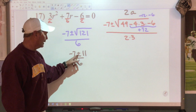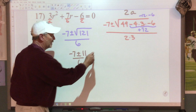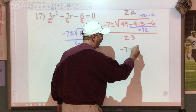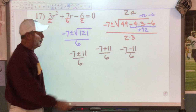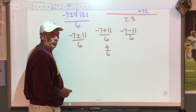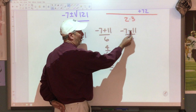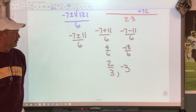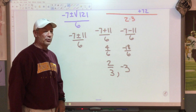I have to work this as a positive 11 and also as a negative 11, which means negative 7 plus 11 over 6, and then negative 7 minus 11 over 6. Negative 7 plus 11 is 4 over 6, which reduces to 2 thirds. Negative 7 minus 11 is negative 18, divided by 6, which gives us negative 3. There are my two answers: two thirds and negative 3.